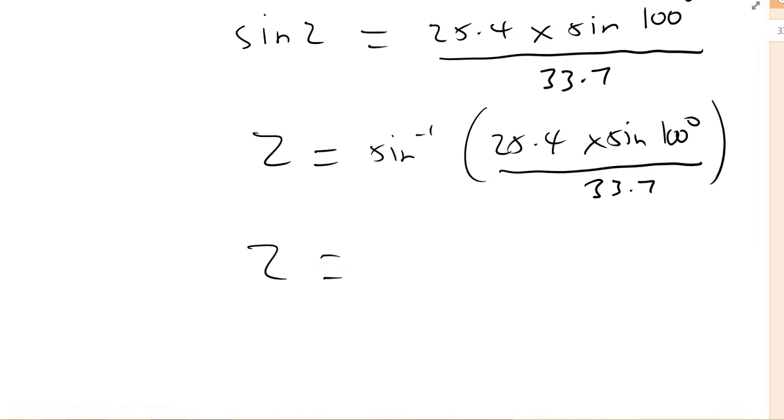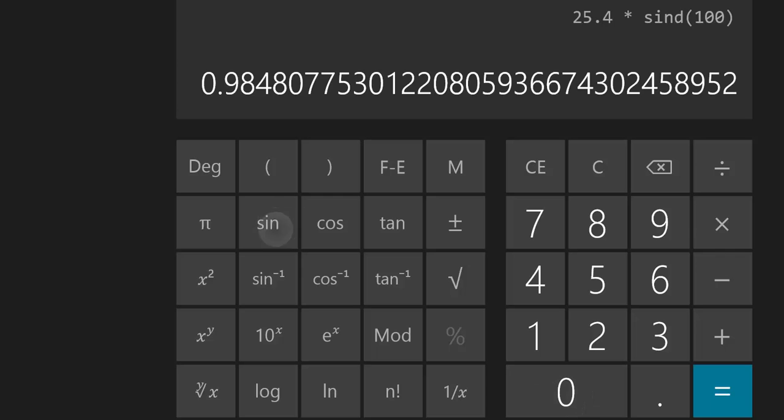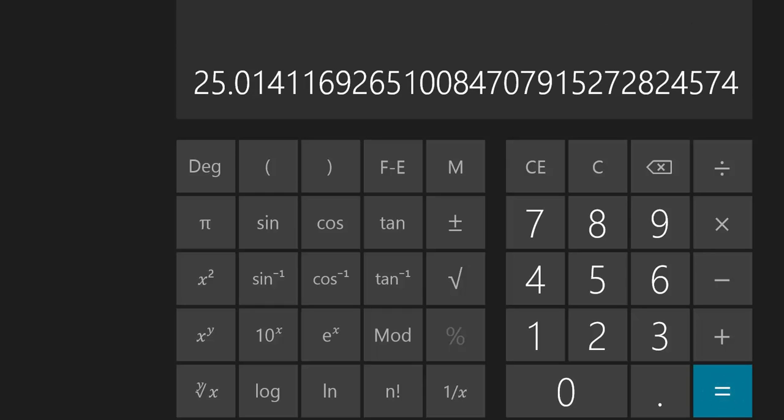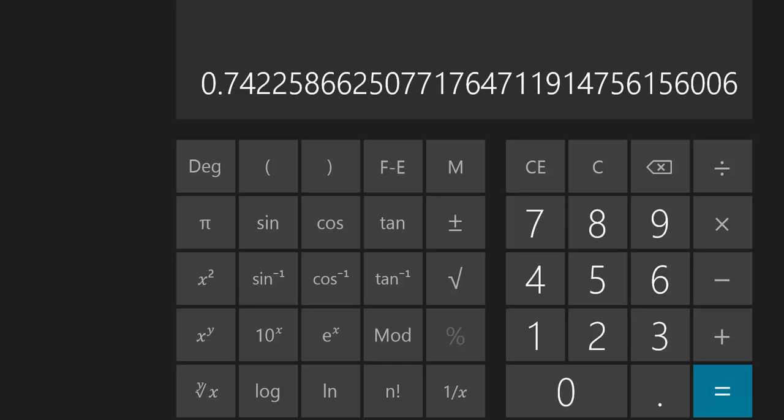Putting this into our calculator, we have 25.4 times the sin of 100, which equals... and we divide that by 33.7, which gives us 0.74.